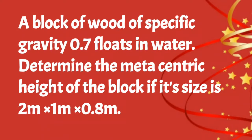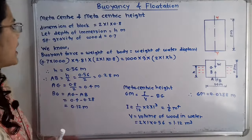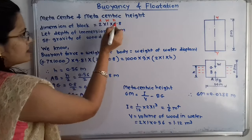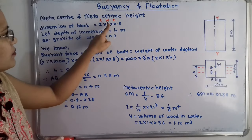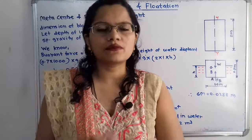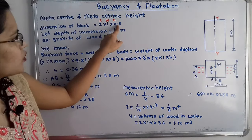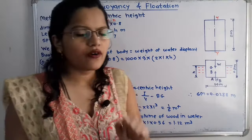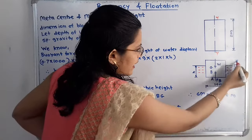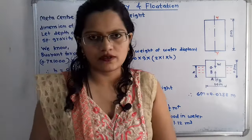Let us first understand the diagram as per the given data. The dimensions are length, width, and height — so 2 m is the length, 1 m is the width, and 0.8 m is the height. When this wooden block is immersed in water, we draw a two-dimensional diagram showing width 1 m and height 0.8 m, and then show the free surface of water.